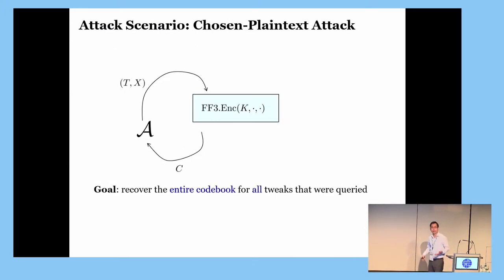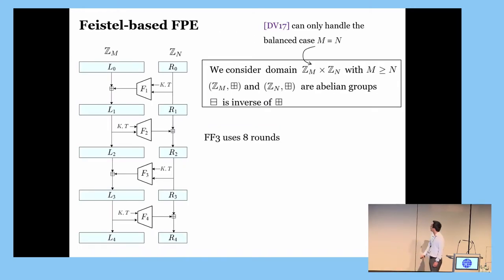So, before we get into the technical details of the attack, let me briefly review the attack notion that we are considering. Our attack is just a chosen plaintext attack. That is, the adversary is given an encryption oracle to query messages and tweaks of its choice to receive the corresponding ciphertexts. The goal of the adversary is very ambitious. It wants to recover the entire codebook on every tweak that it queries.